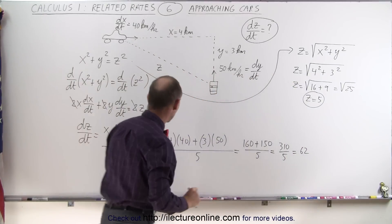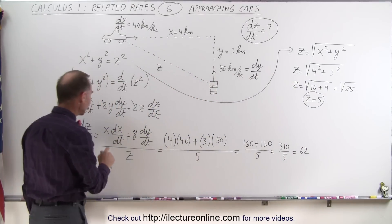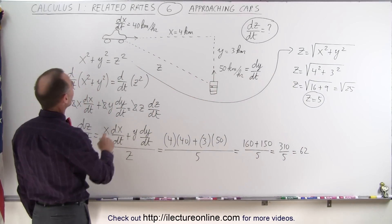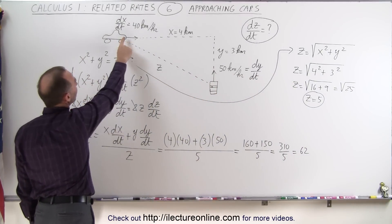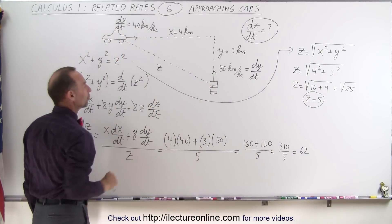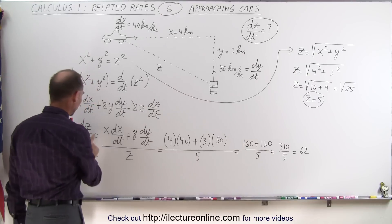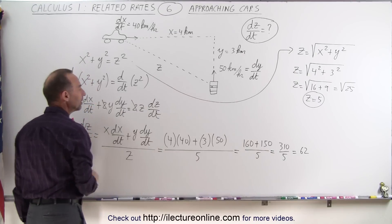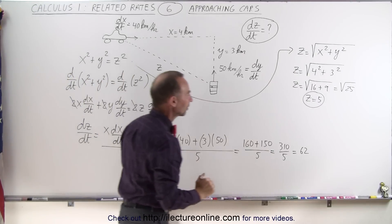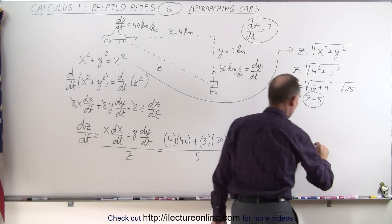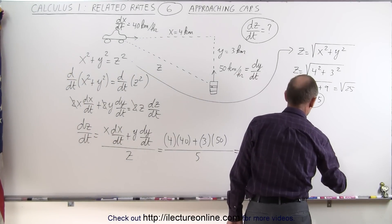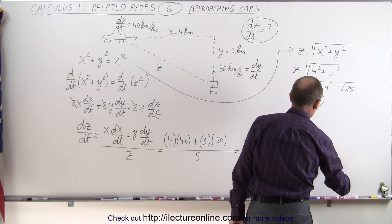Unit-wise, notice that everything was expressed in terms of kilometers and kilometers per hour. And so dz/dt is 62 kilometers per hour.